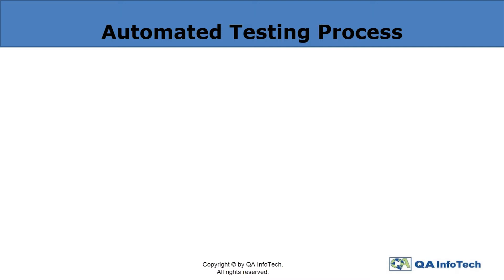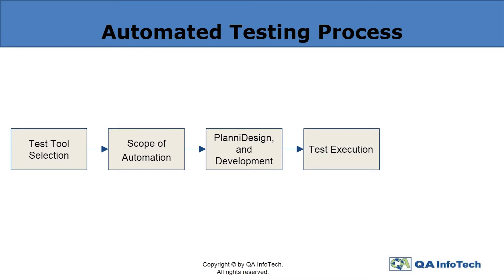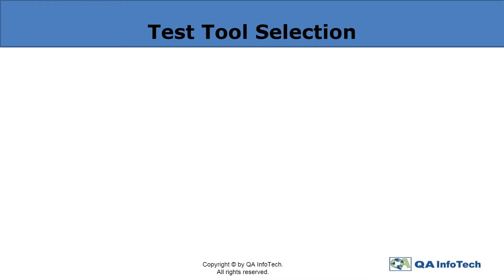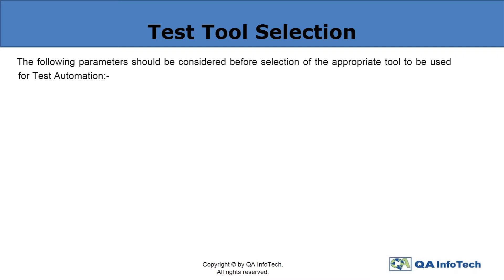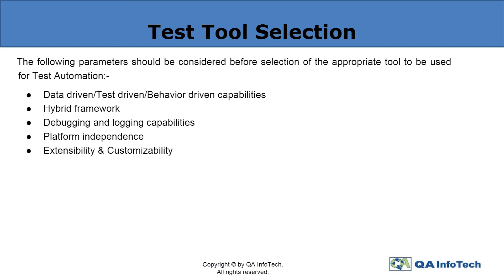The steps involved include test tool selection, defining the scope of automation, planning, design and development, test execution and finally maintenance. The most important aspect to consider while initiating a test automation process is the right tool selection. According to the scenario, one needs to select an appropriate tool considering certain parameters like the tool's data, test or behavior driven capabilities, debugging and logging capabilities, platform independence, whether it supports unattended test runs, and push email notifications, etc.